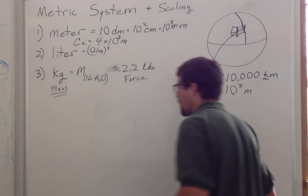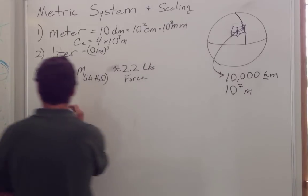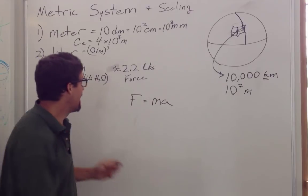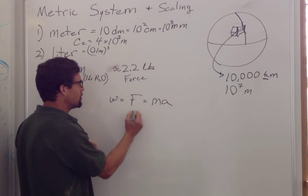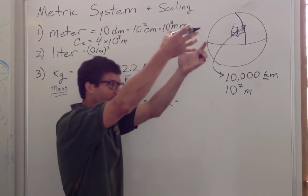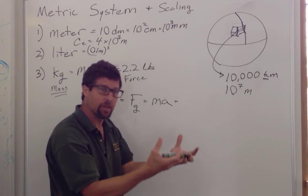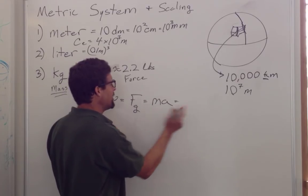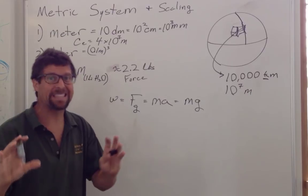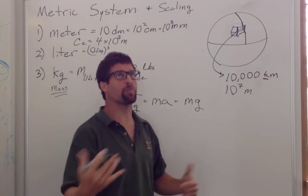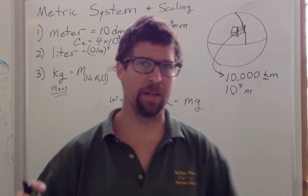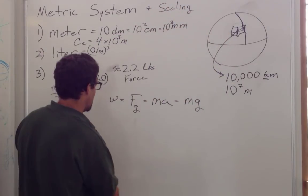But hold on. Newton told us that force is equal to mass times acceleration, and weight is the force due to gravity pulling on something. And so if you drop something, it accelerates with gravitational acceleration. And so the weight must be equal to the mass times the acceleration of gravity, which we estimate is 9.81 meters per second squared. In this class, we'll always estimate it at about 10 meters per second squared.